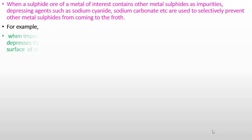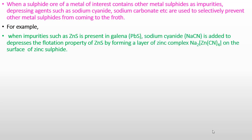For example, when impurities such as zinc sulfide are present in galena, sodium cyanide is added to depress the floating property of zinc sulfide by forming a layer of zinc complex on its surface. In a mixture of zinc sulfide and lead sulfide (galena), zinc sulfide reacts with sodium cyanide to form a complex and does not froth to the surface. This method is called the froth flotation method.